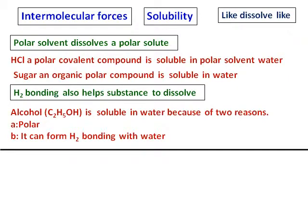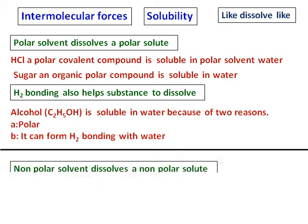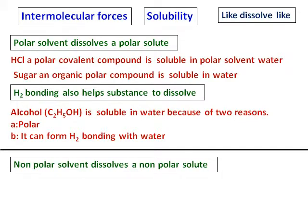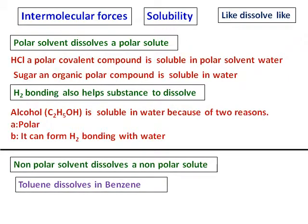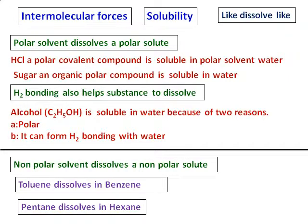Now coming to non-polar compounds, a non-polar solvent dissolves a non-polar solute. For example, toluene dissolves benzene — both are organic non-polar compounds. Pentane dissolves in hexane. Benzene cannot dissolve in water because one is polar and the other one is non-polar.